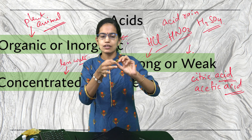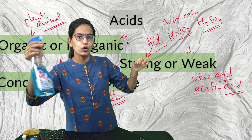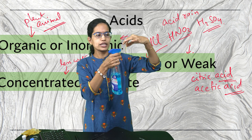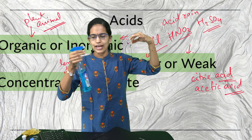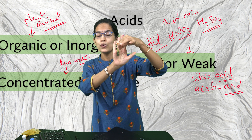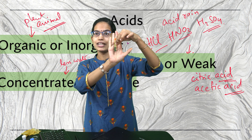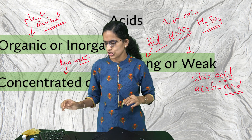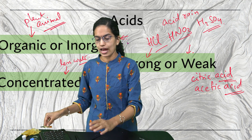To understand bases: I have a glass cleaner (choline) and I spray it on the universal indicator. As you can see, the universal indicator turns blue, indicating that this glass cleaner is basic in nature. This is how we understand acids.